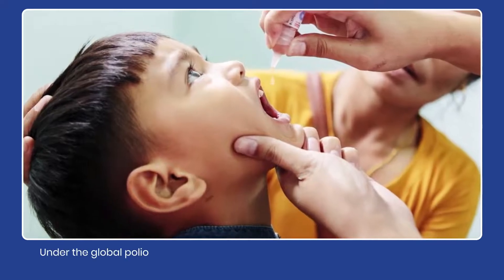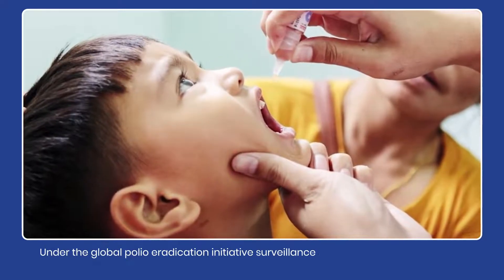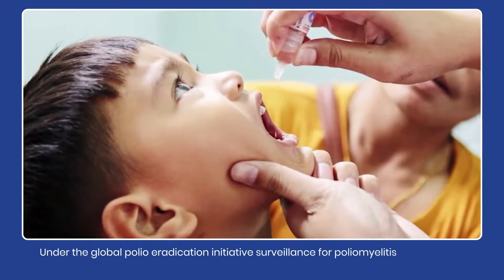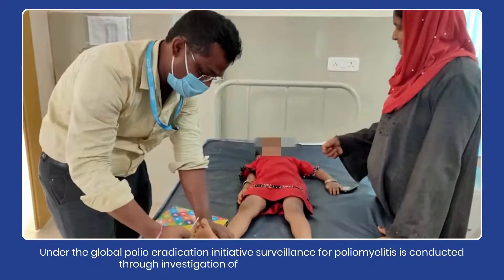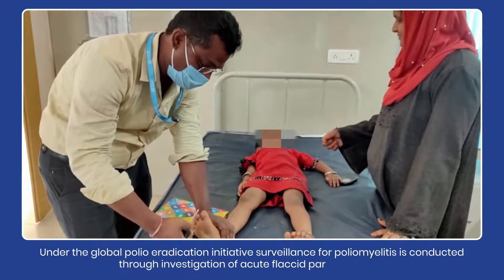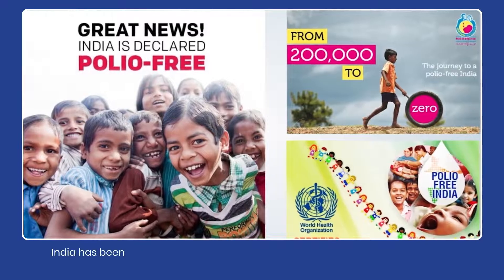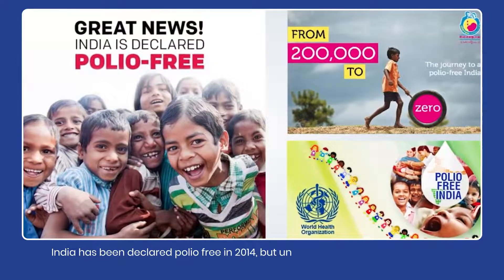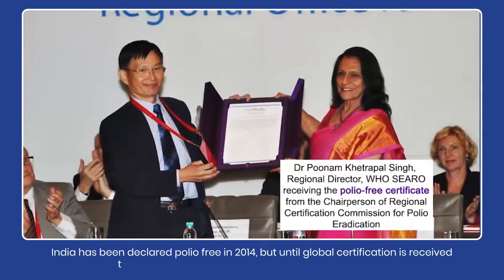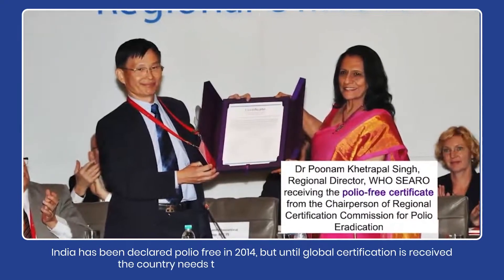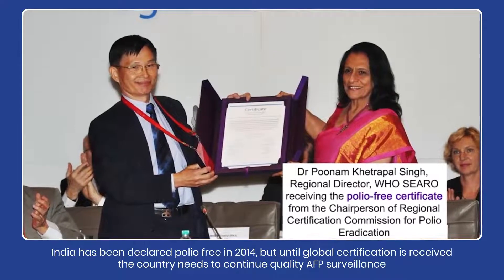Under the Global Polio Eradication Initiative, surveillance for poliomyelitis is conducted through investigation of acute flaccid paralysis cases. India has been declared polio-free in 2014, but until global certification is received, the country needs to continue quality AFP surveillance.